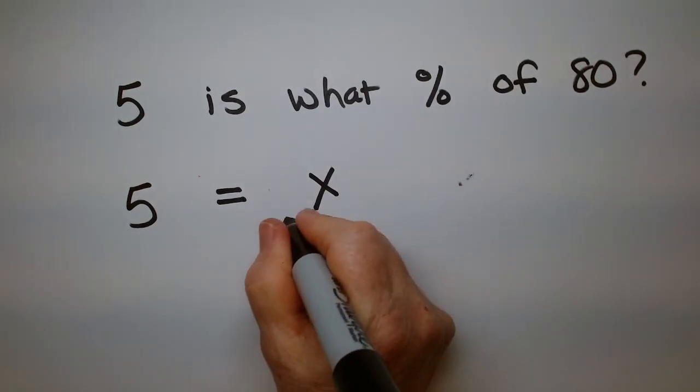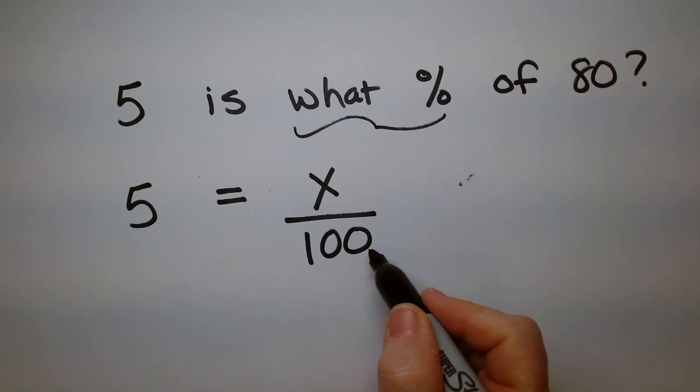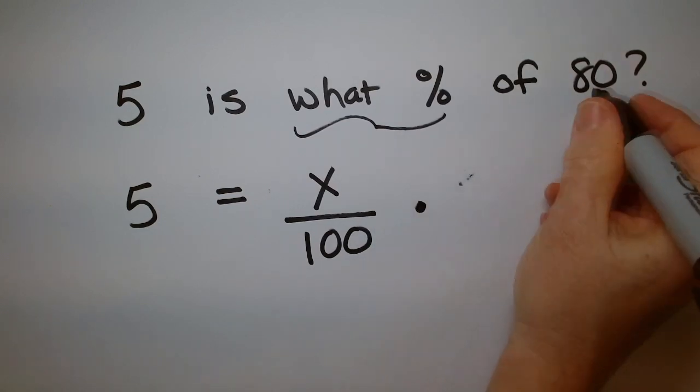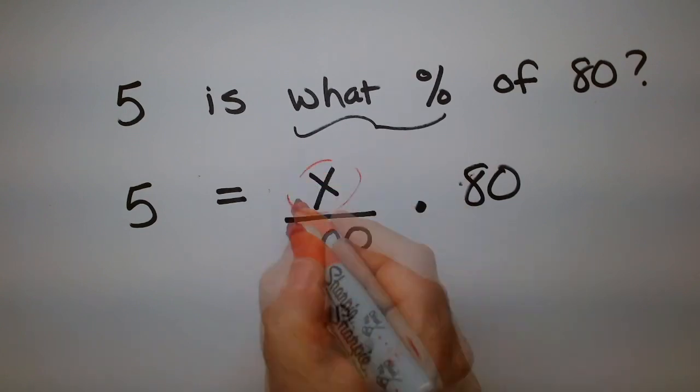What percent, so it's going to be something over 100. What percent turns into this. Of is multiply, and then 80 we just write down. You see how we're taking words and making them into math symbols that we can work with? Now all we have to do is solve for X.